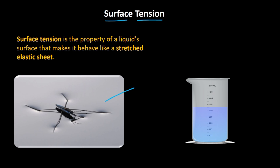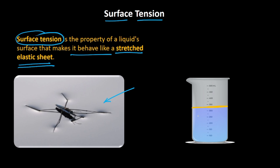You might have seen an insect crawling on the water. If you look at this very carefully, it feels that the water is behaving like a stretched elastic sheet. This property of liquid surface that makes it behave like a stretched elastic sheet is what is called the surface tension. This simply means that if we have water in a container, then the topmost layer of the water will be behaving like a stretched elastic sheet. But how does it behave like a stretched elastic sheet?